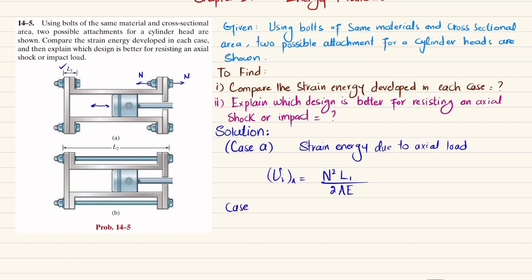Ui for case B will be equal to—here you can see this bolt will experience normal load or axial load. The bolt will be in tension, so it will be equal to N² times L2 divided by 2AE.